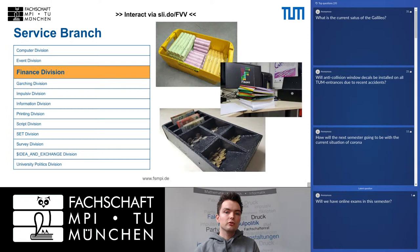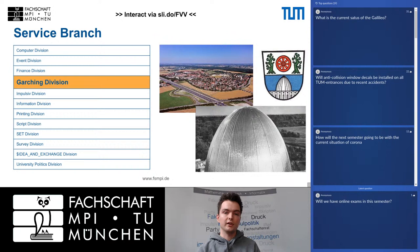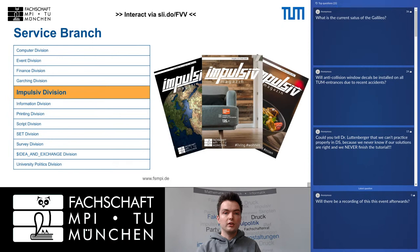The Finance Division works in the background and manages all the money and finances of the Student Council. The Garhing Division talks to the city of Garhing to keep information flowing with the mayor and others, and provides information to students via our Information Division. The Impulsiv Division creates our local Student Council newspaper, currently only available digitally via our website.